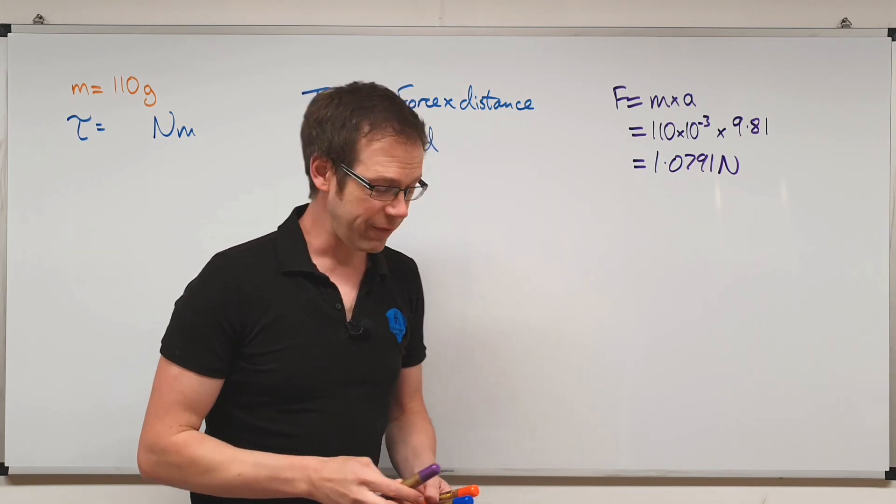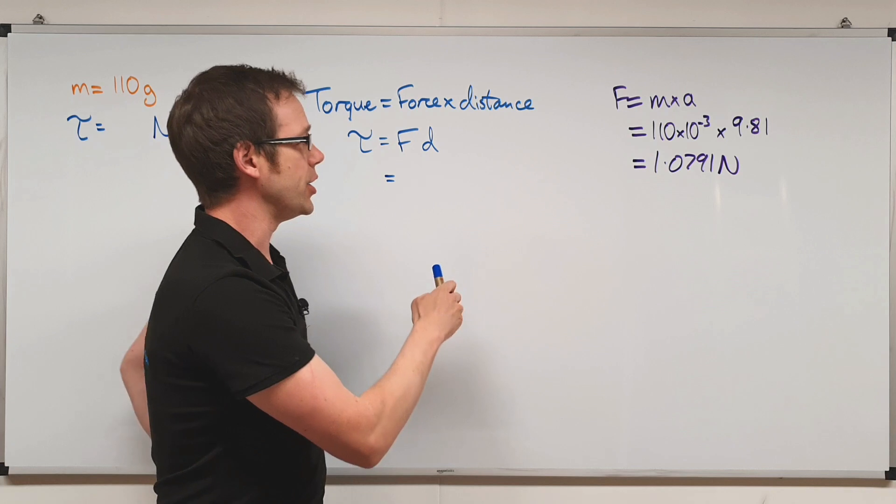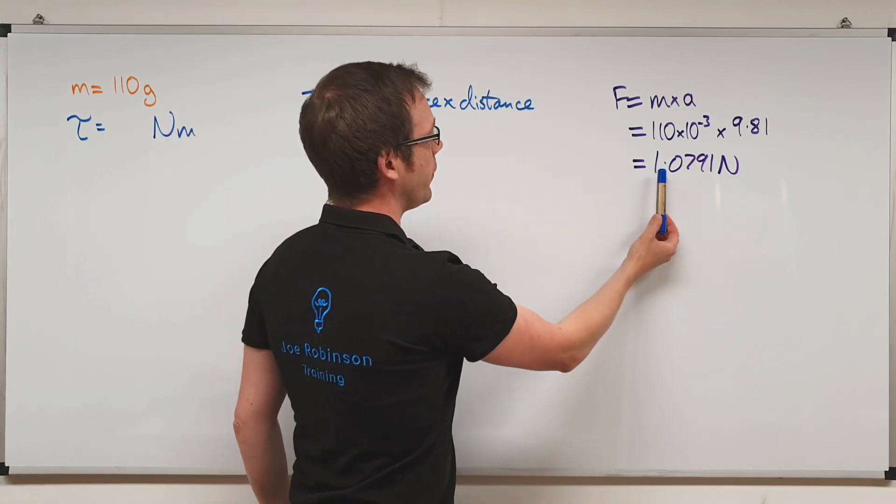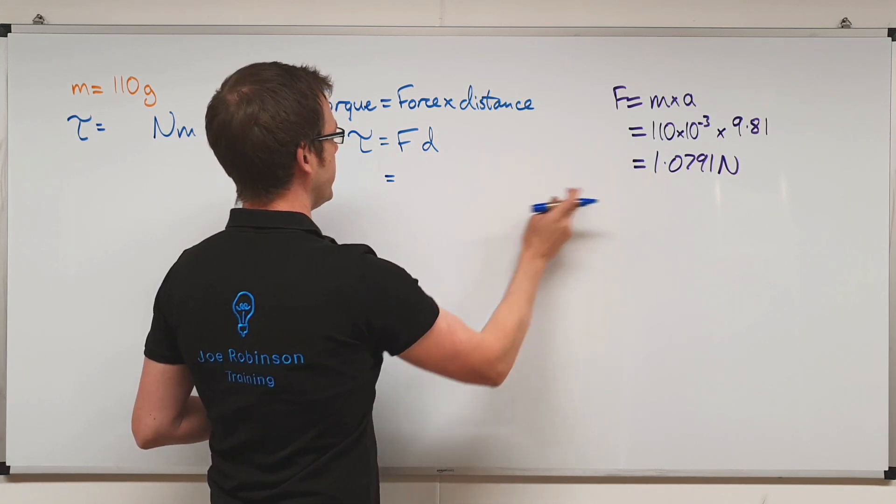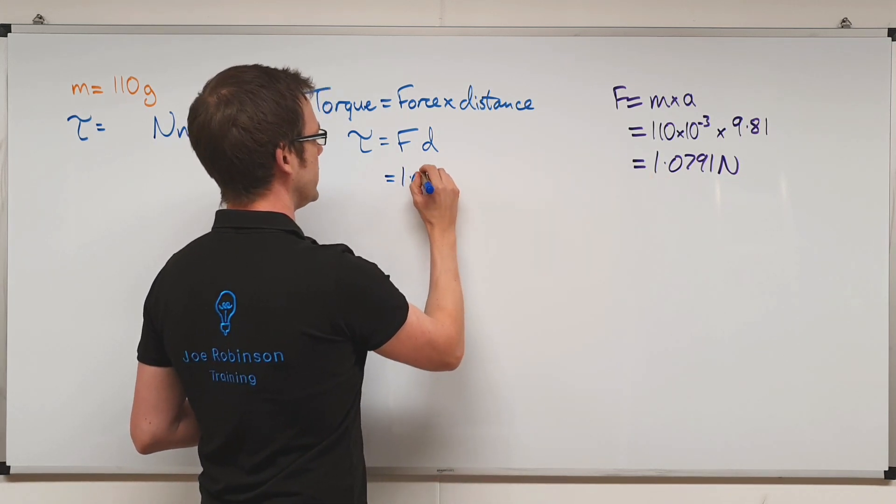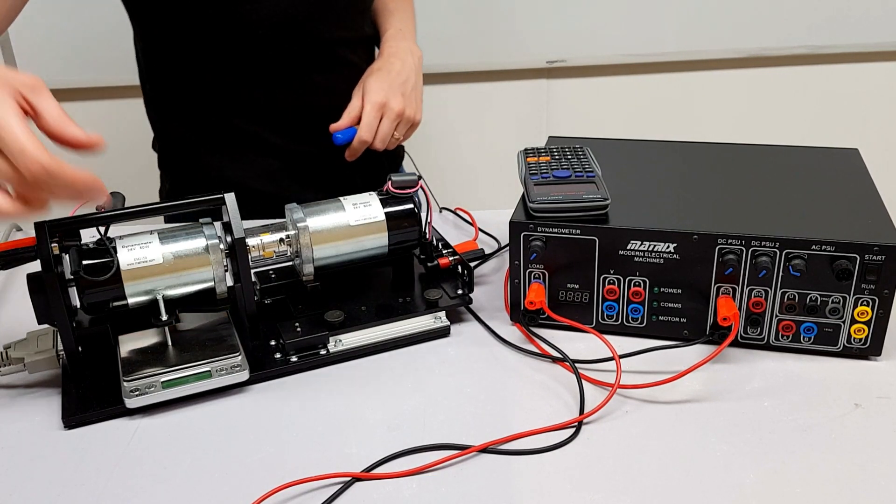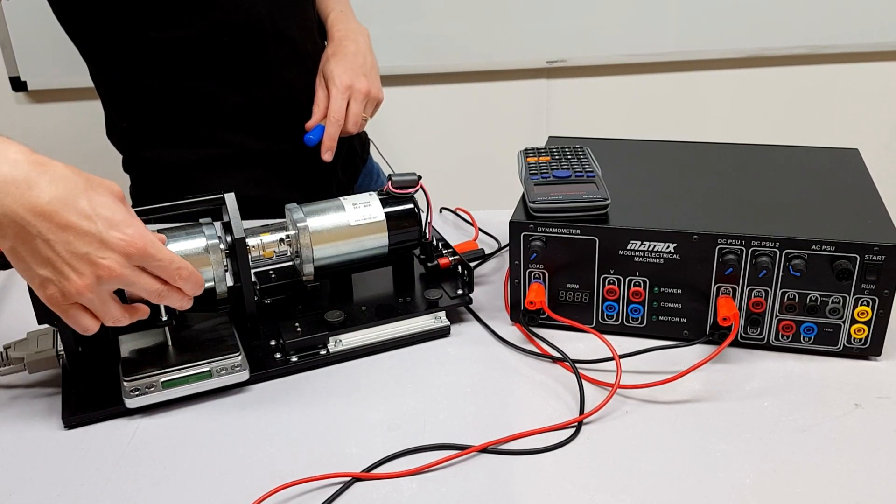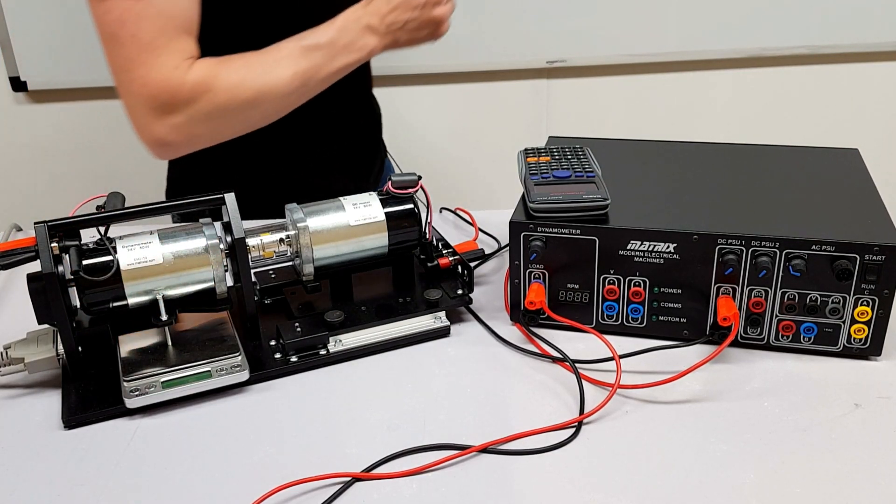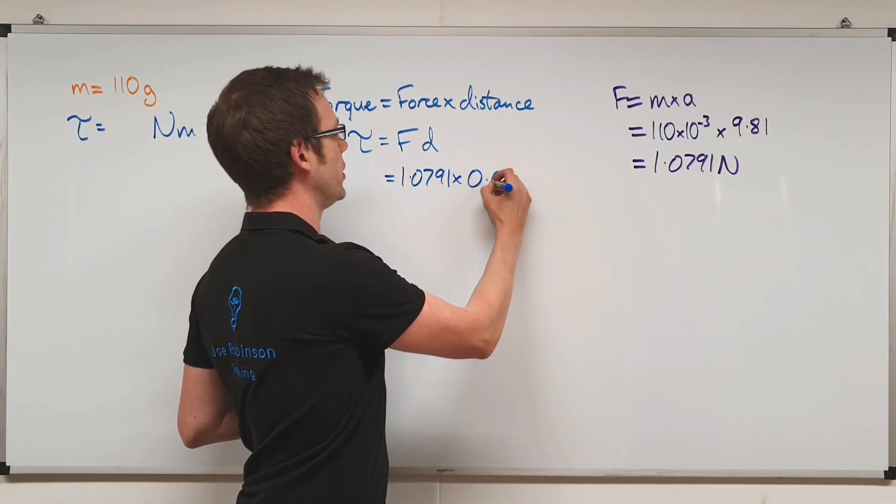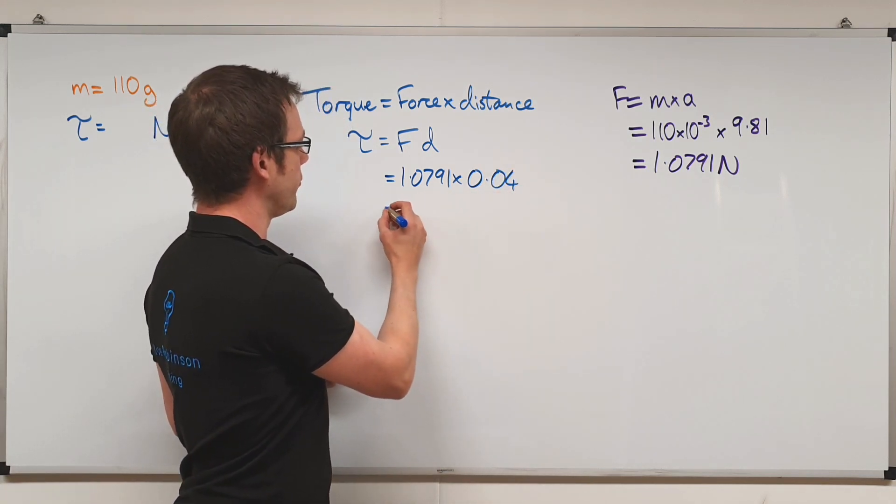So that's really helpful because it gives us the number that we can now put into our torque calculation. So we've got a value of 1.0791 newtons. So there's our force measurement that we can put in here, 1.0791, and we're going to times it by the distance from the axis. Now from the dynamometer, that is 0.04 meters, which is actually four centimeters. But we're going to times that by 0.04. So 1.0791 times by 0.04.